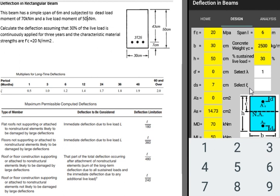Select XI. We press in this box to select XI. XI is a multiplier for long-time deflections. It depends on period.